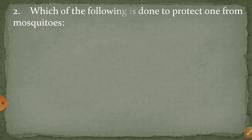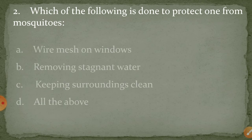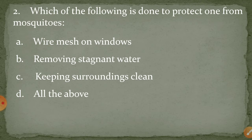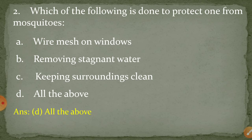Next question: which of the following is done to protect oneself from mosquitoes? Ki mosquitoes se bachne ke liye kya bachaao karna chahiye? First is wire mesh on windows yaani khidkiyon pe jaali lagani chahiye. Removing stagnant water yaani ki jo badbudar paani hota hai usko hatana chahiye. Keeping surroundings clean, aapne aas paas jo hai woh clean rakhna chahiye. So the right answer is all the above — yaani ki sab kuch karna chahiye, tab hi machharon se bachaao ho payega.